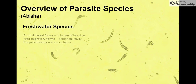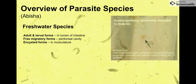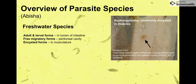These parasites can be found in different areas of fish species. The adult and larval forms of nematode parasites are generally found in the lumen of the intestine. The free migratory forms are generally found in the peritoneal cavity, and the encysted forms are generally found in the musculature.